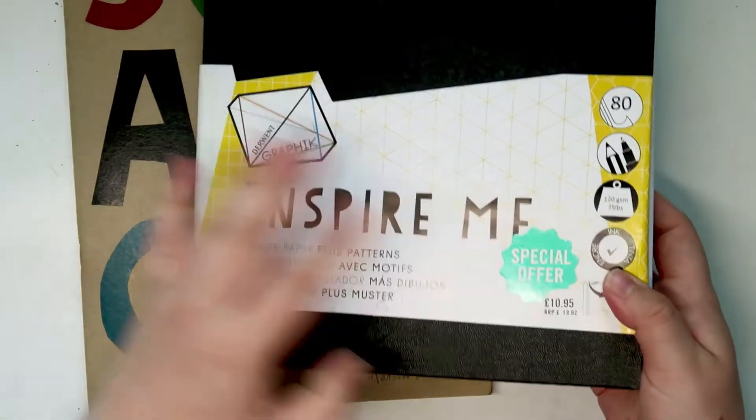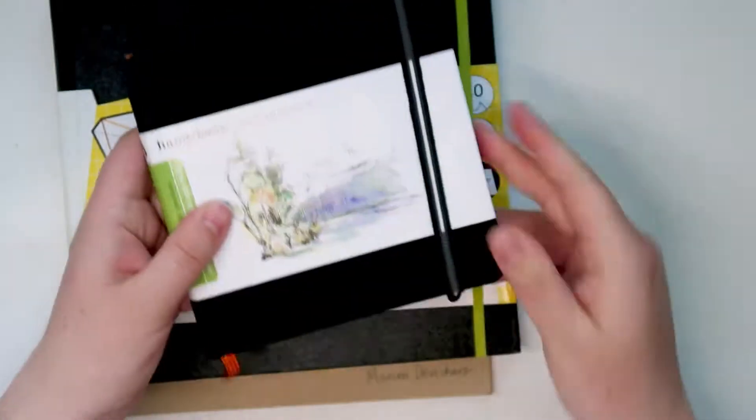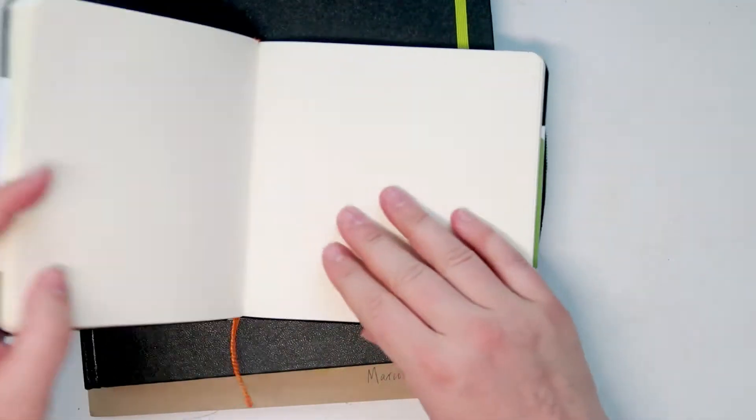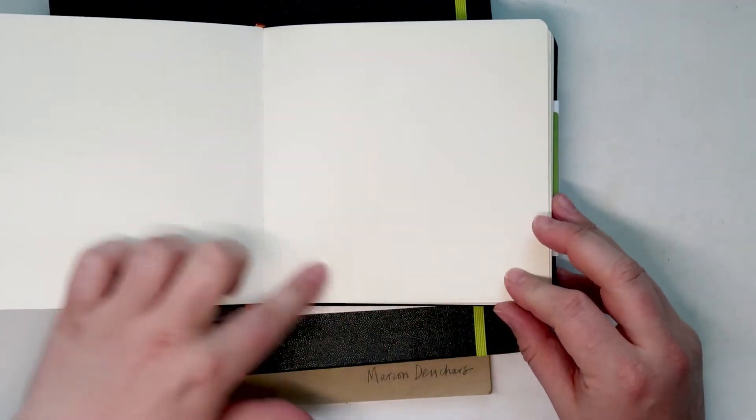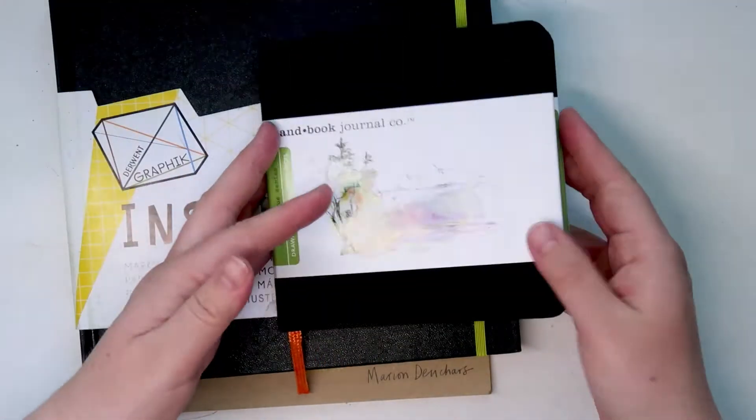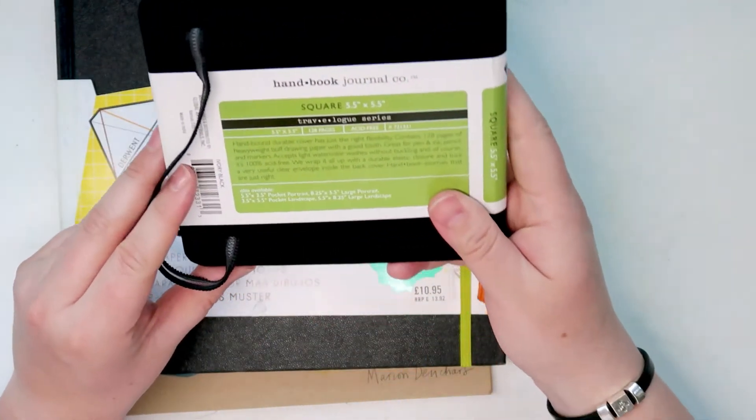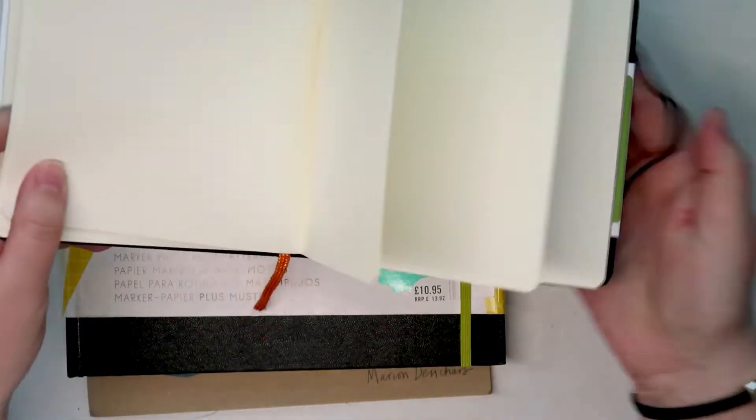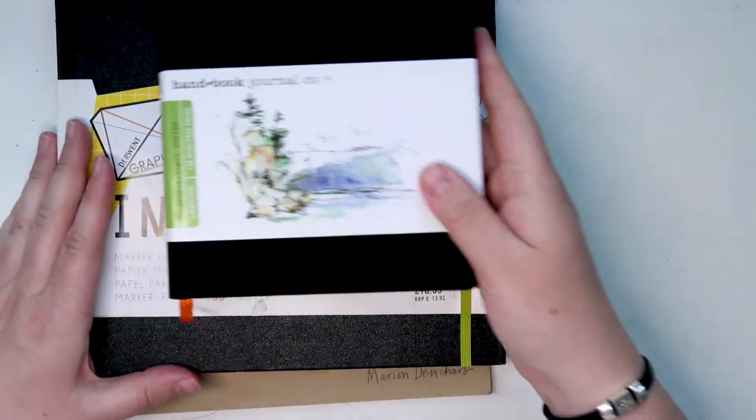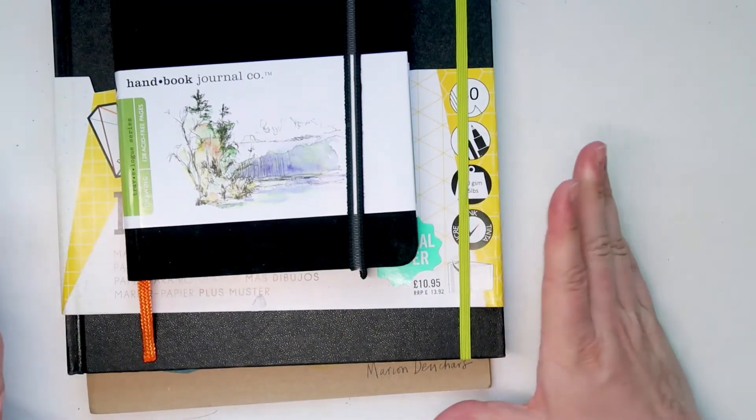Then I got this Handbook Journal. I wanted to try one of these for ages, mainly because it's a square format and I thought it'd be really fun to do square pictures and then also obviously you have the longer version if you need it. It says it's for drawing here and it says it can use light watercolor washes but not heavy watercolor, so it's mainly used for drawing, sketching, and inks. So I'm gonna try a bit of everything on it and see how the pages handle the inks and the watercolors.